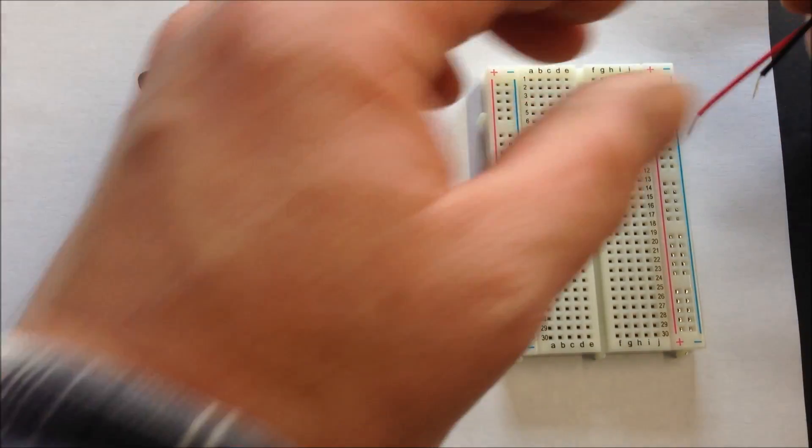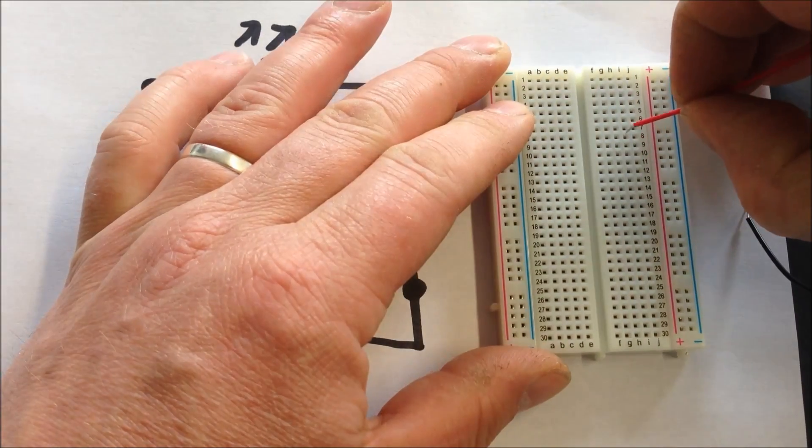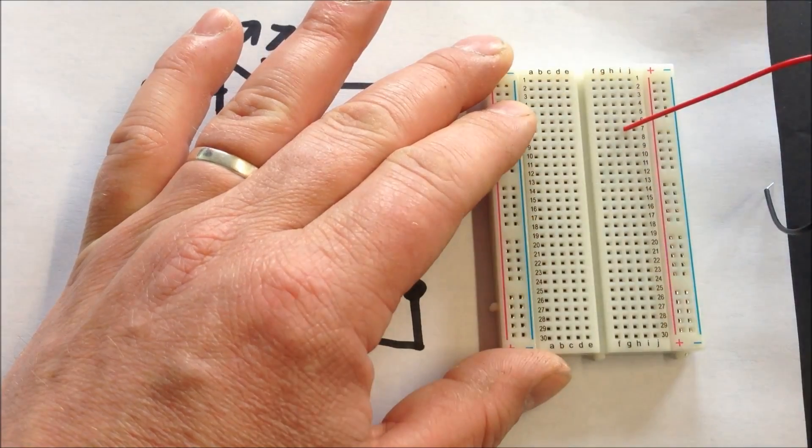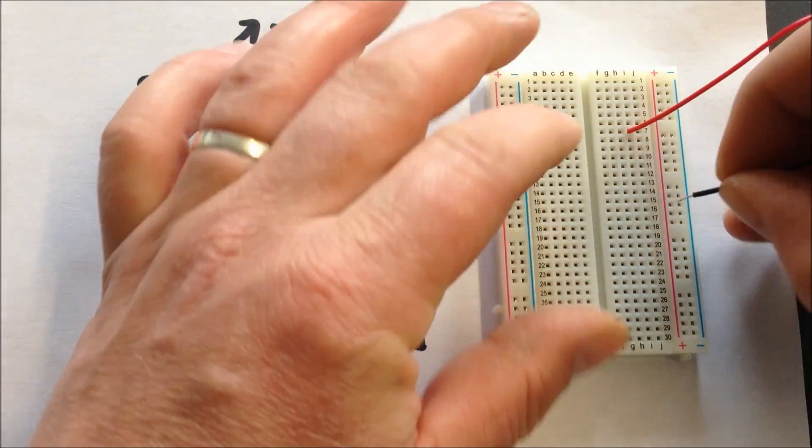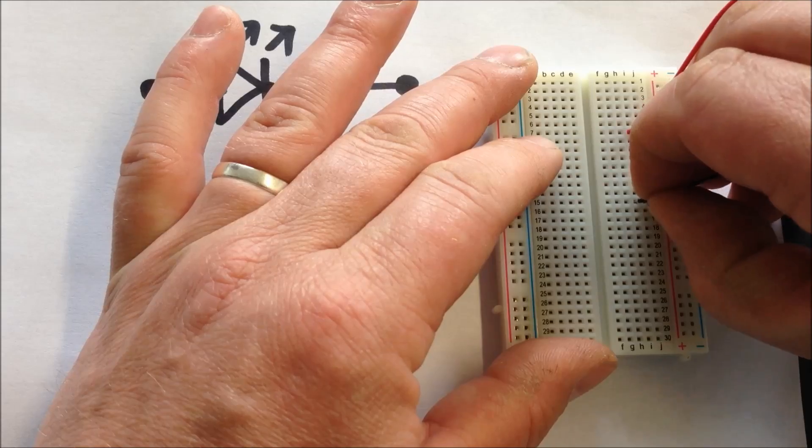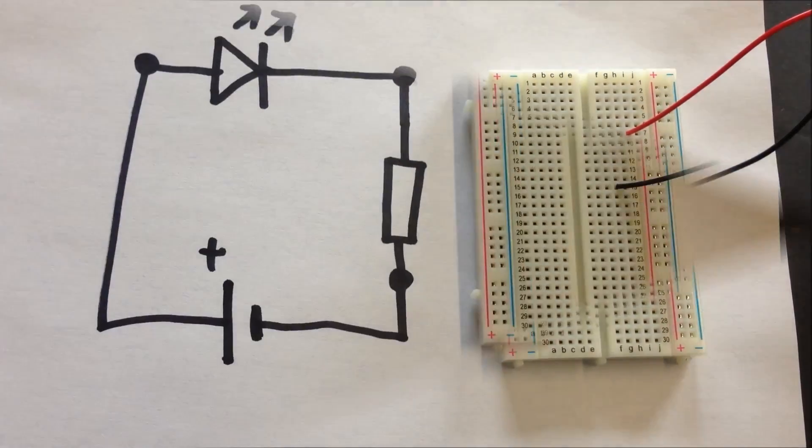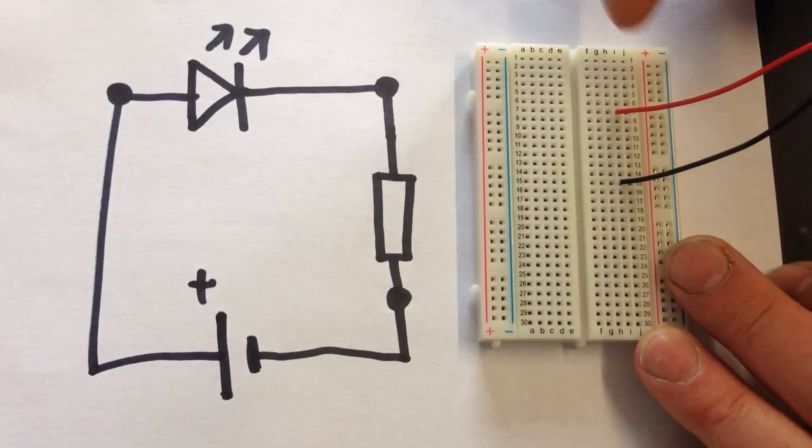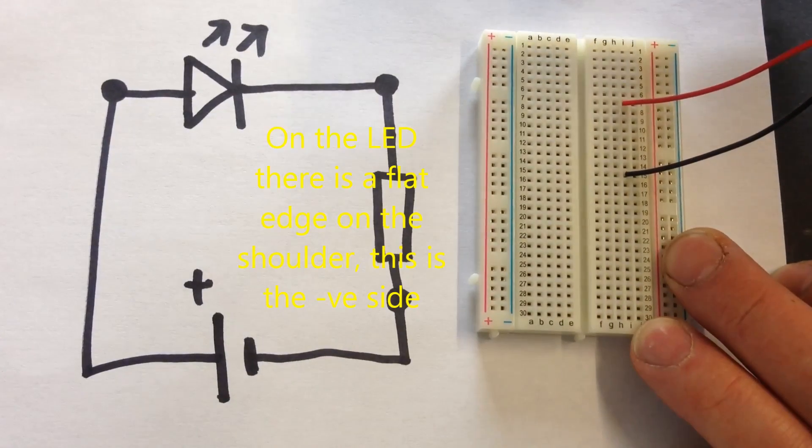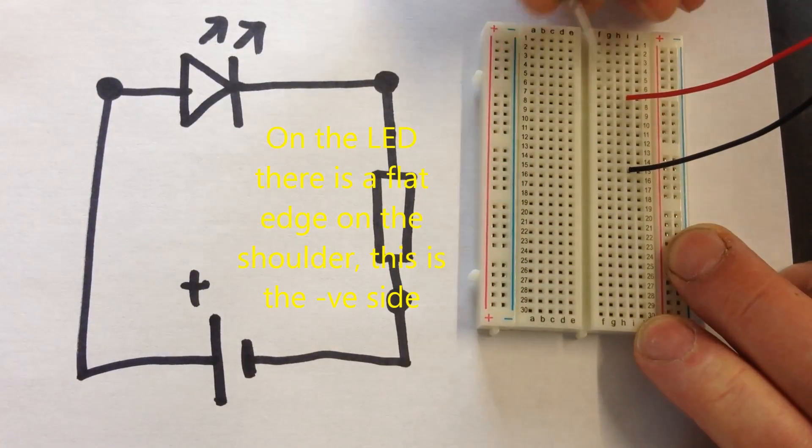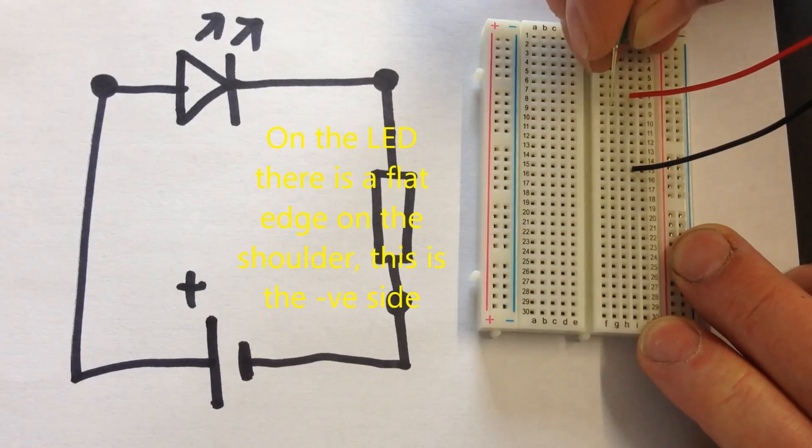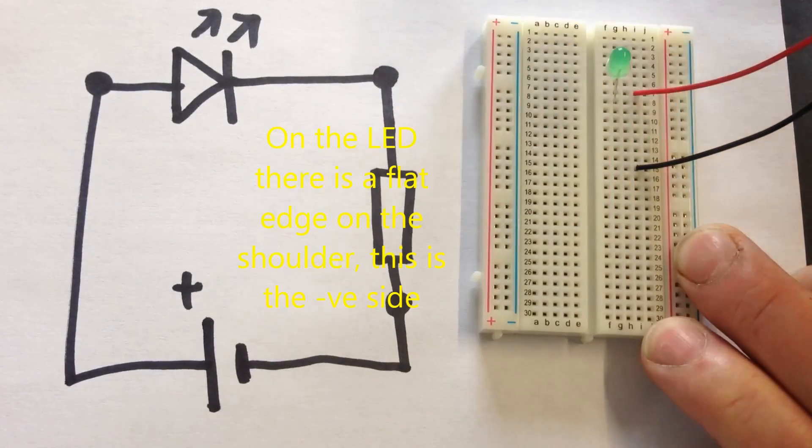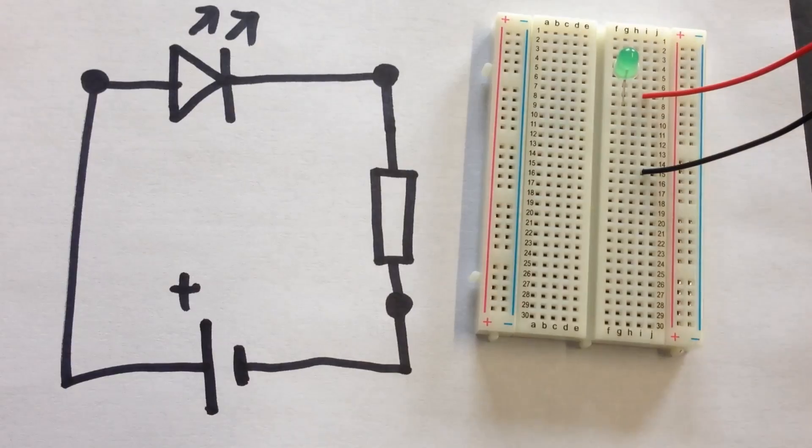So we need our battery. We want the plus and the minus to be in two separate tracks. So at this joint here we need to connect the plus and one leg of the LED. We know it needs to be on the same row. So we'll push the LED into that row. And as you can see the other leg is in a different row.